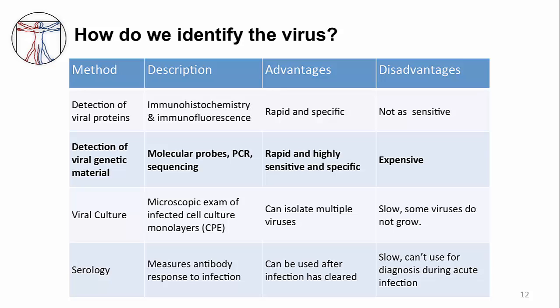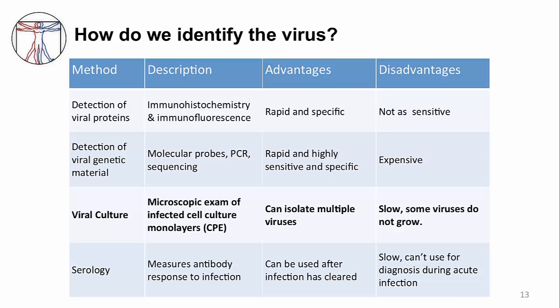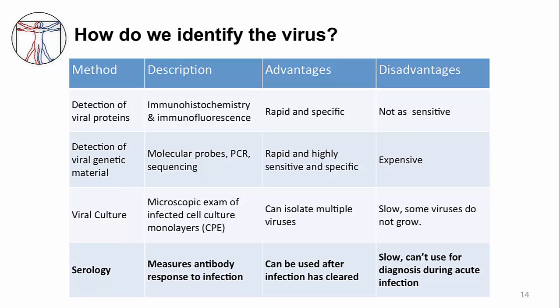Molecular methods are much more sensitive. One of the new patterns we are finding are patients who have multiple viruses at the same time. Not all hospitals have this type of test because it's quite expensive. In the past, viral culture was the gold standard — you can directly isolate the virus — but this is a slow test, and sometimes you don't get the answer until after the patient is better. The last method is serology, which looks for the antibody response to the virus. Unlike the other tests, it doesn't detect the presence of the virus itself, and can be used after an infection has cleared.